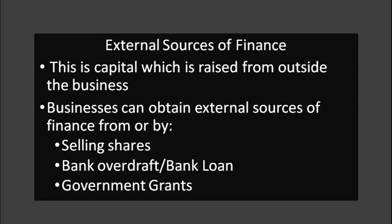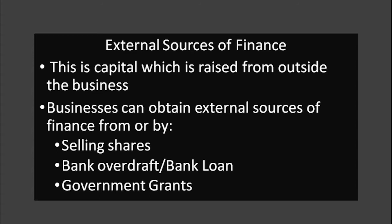Let's start with the main lesson on external sources of finance. This is capital which is raised from outside the business. Businesses can obtain external sources of finance by selling shares, bank overdraft, bank loan, or government grants, to name a few examples. External sources of finance can be divided into two types: short term finance and long term finance.